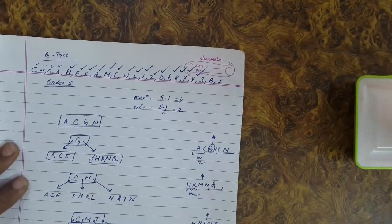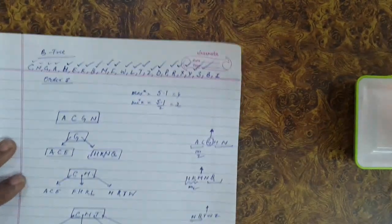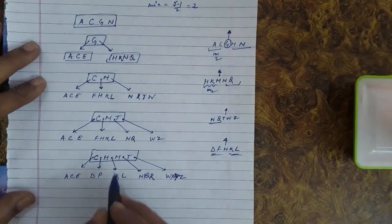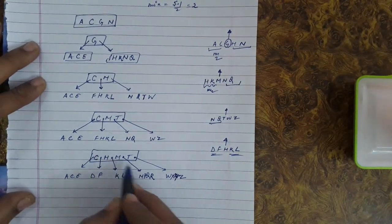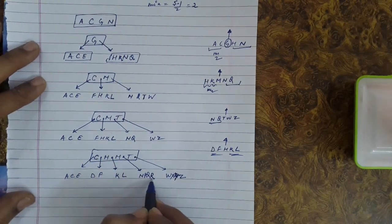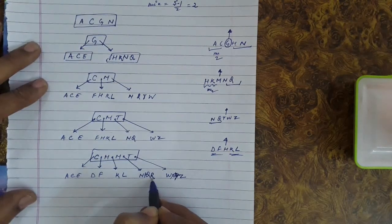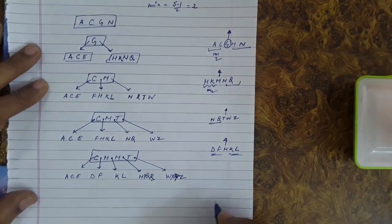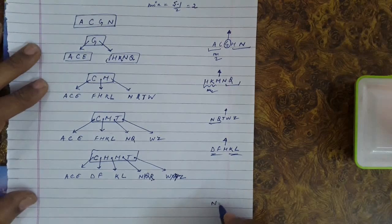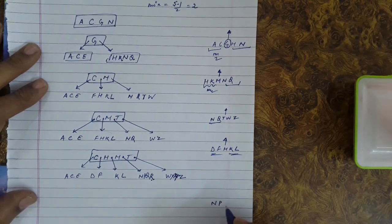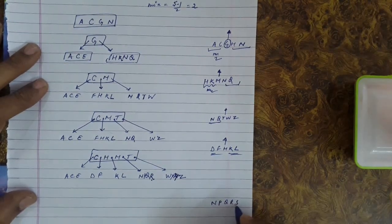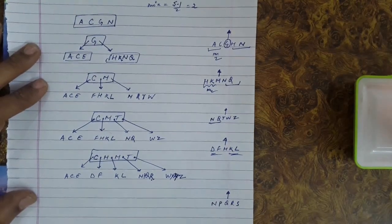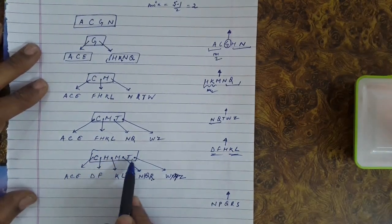Next key for insertion is S. S will come in that node, but the maximum condition is violated. Insert S virtually: N, P, Q, R, S — the median Q will be sent upwards. Inserting Q into the root node also violates the maximum condition there.